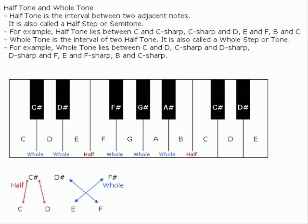Halftone and wholetone. A halftone is the interval between two adjacent notes. It is also called a half-step or semitone. For example, a halftone lies between C and C-sharp, C-sharp and D, E and F, and B and C.